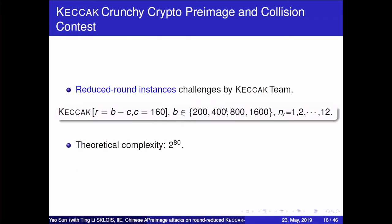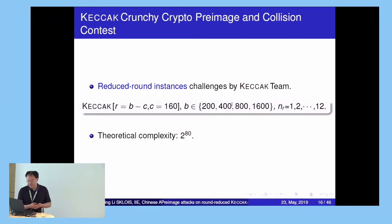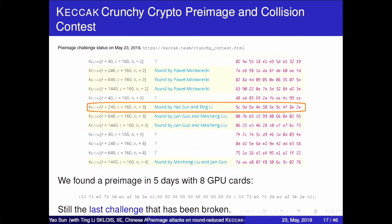The Keccak team also holds a crunchy crypto pre-image and collision contest to encourage the study of Keccak. The instances in this challenge are weaker, with theoretical complexity of only 2^80. Only one full-round instance has been broken, but many lower-round instances remain unbroken. Our names appear here — we found a pre-image in five days with eight GPUs in the summer of 2017, and this is still the last challenge that has been broken. This attack motivates our multi-block mode.